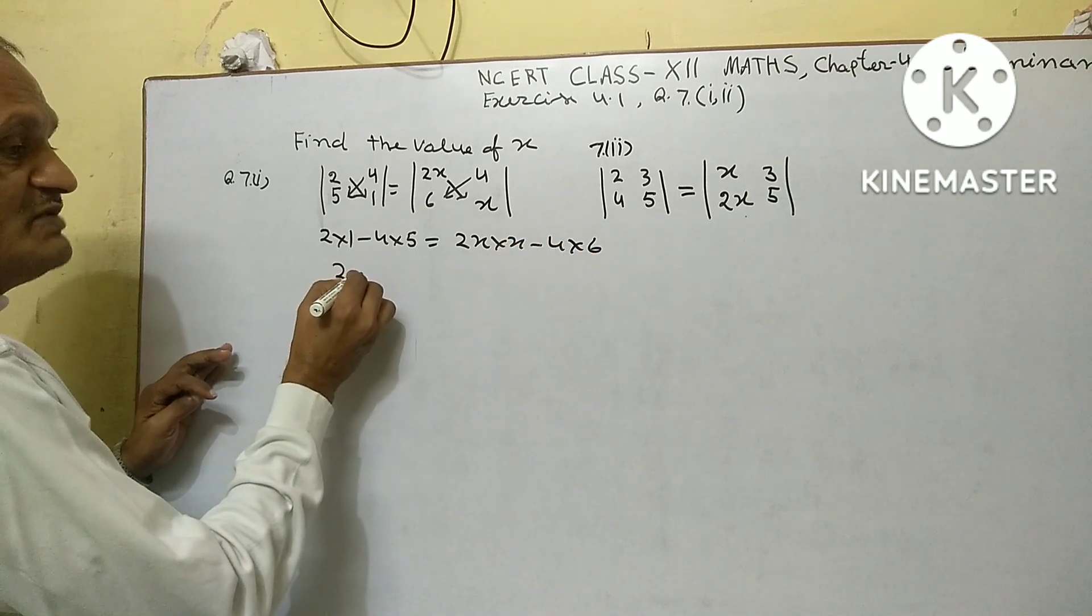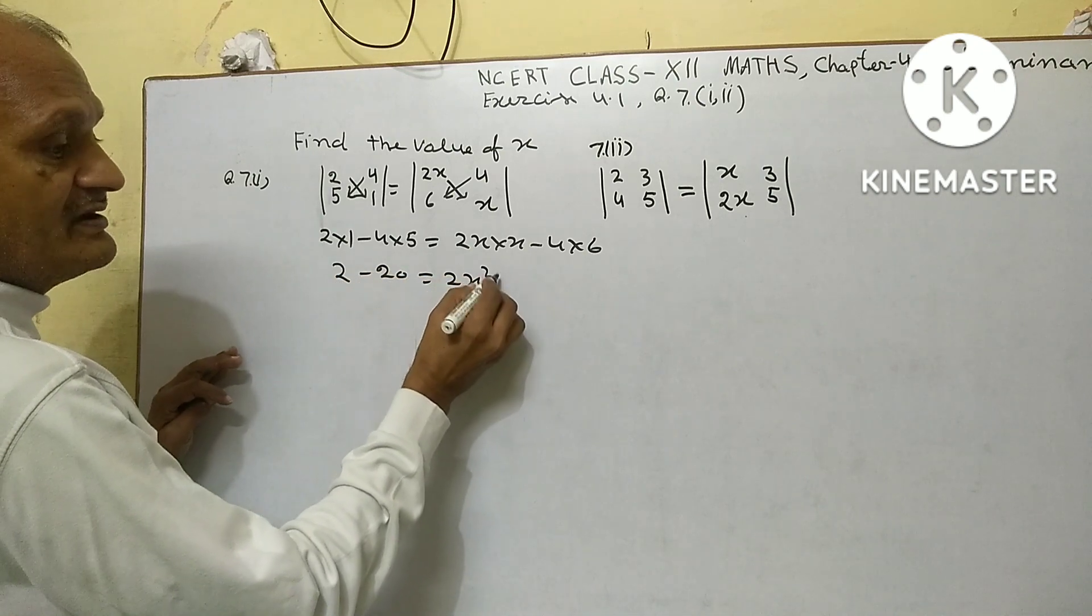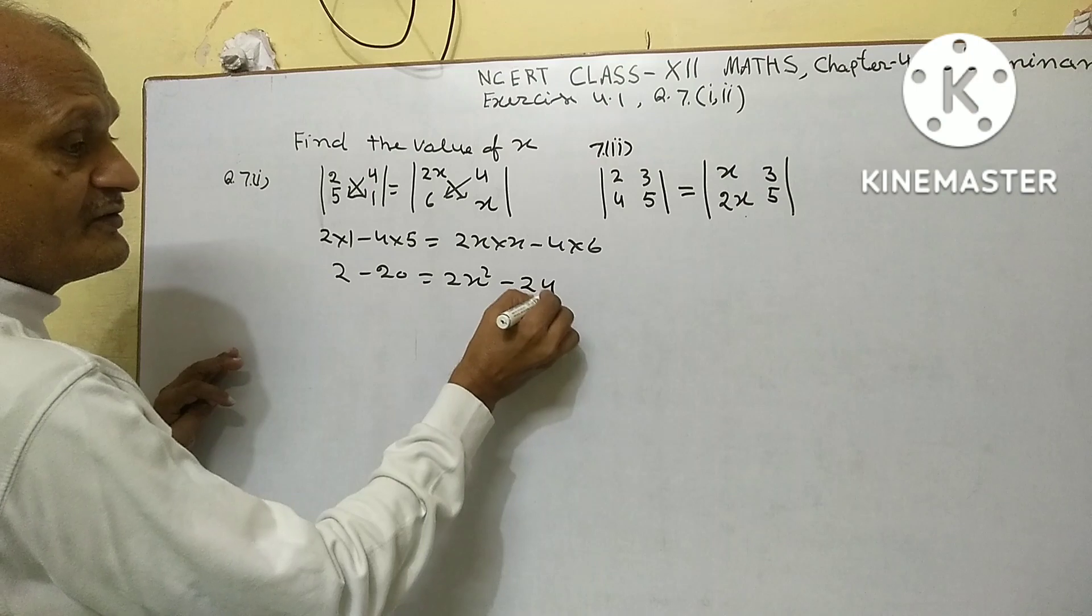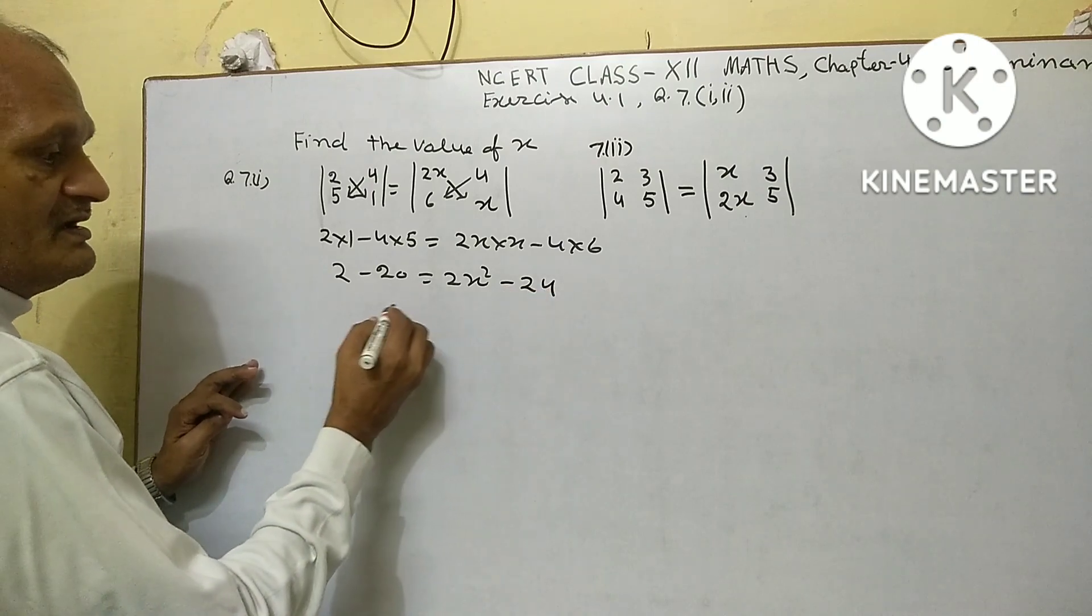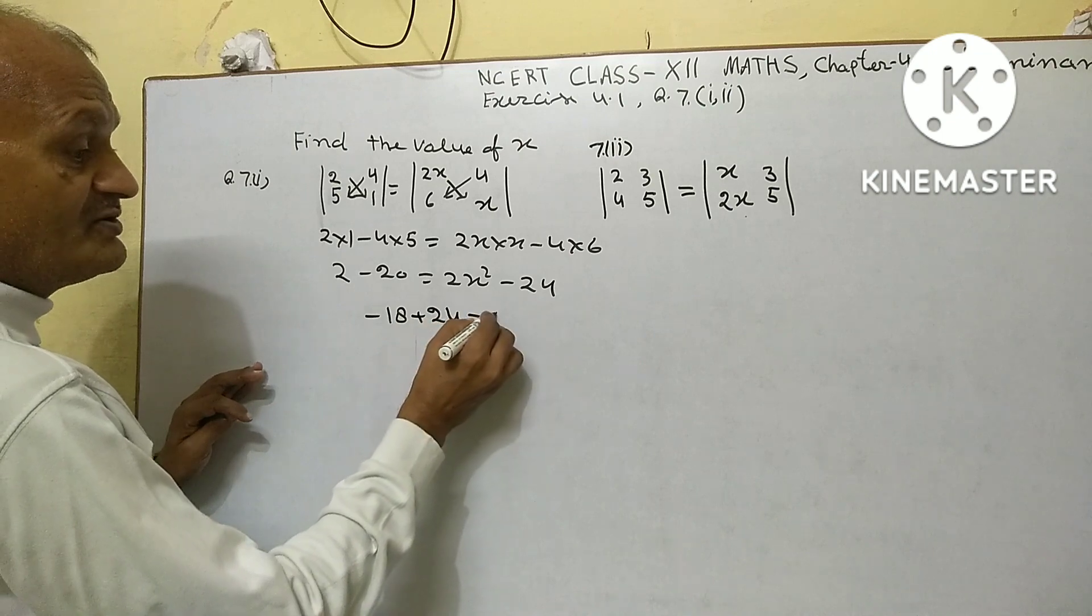This means 2 minus 20 equal to 2x squared minus 24. Now minus 18 plus 24 equals 2x squared.